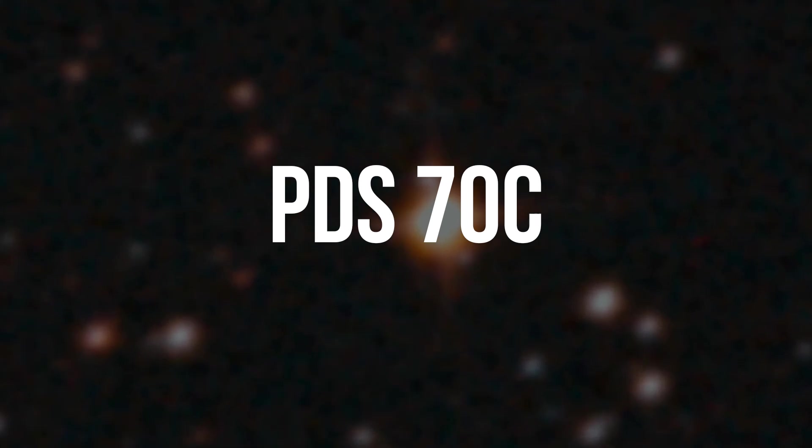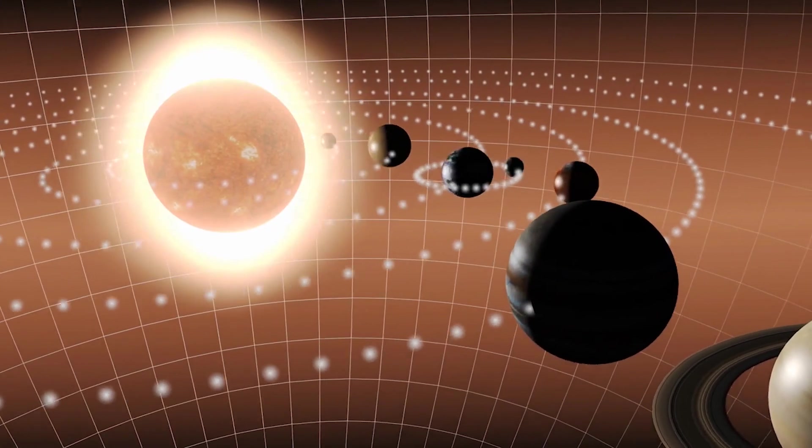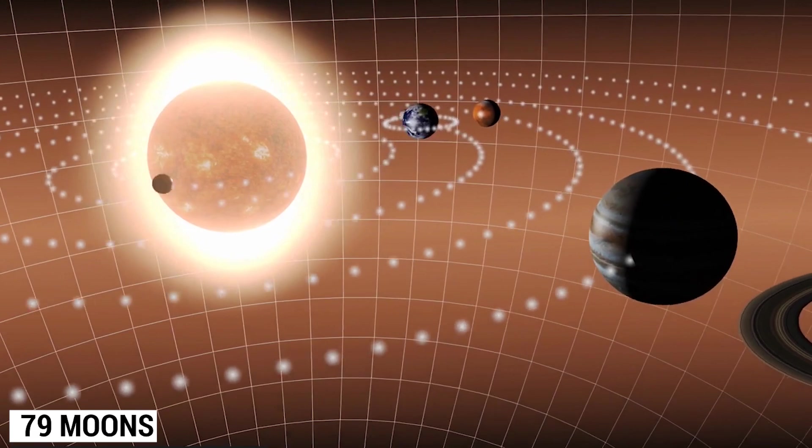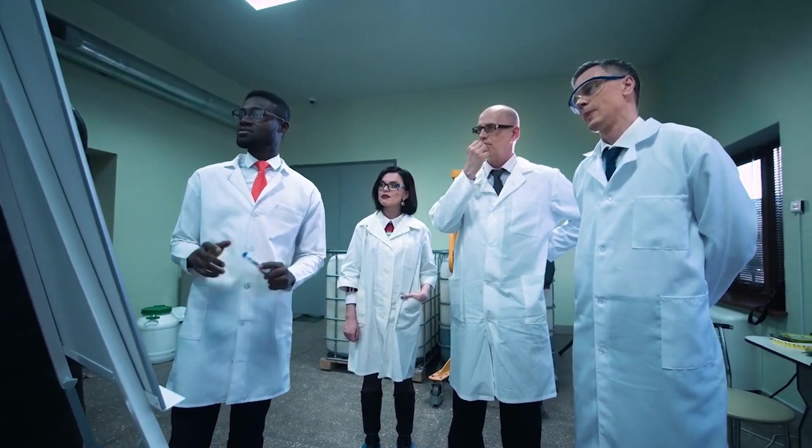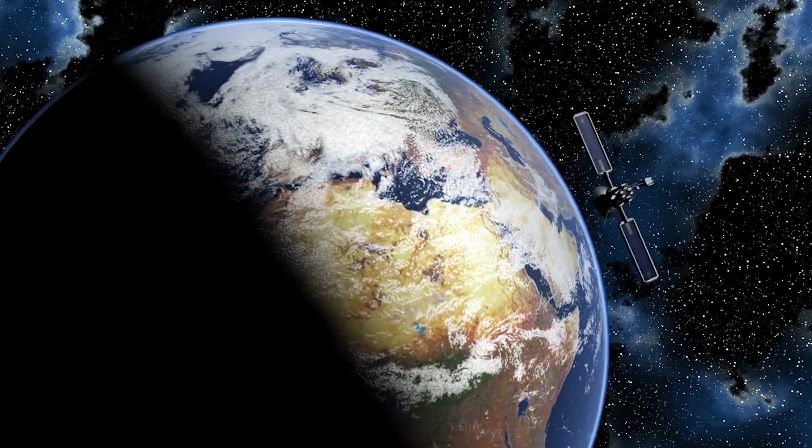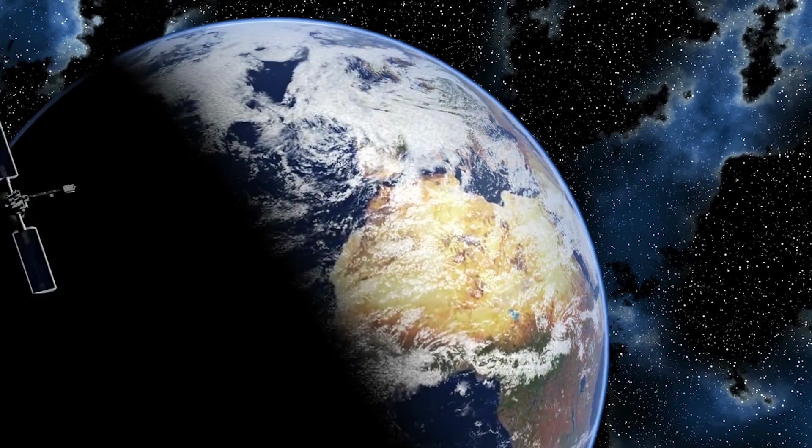PDS-70C. Let's return to the solar system. The largest planet has 79 moons. Exoplanets must have exomoons. Researchers have not yet found anything at all for years. Now, finding small spacecraft circling exoplanets is difficult.